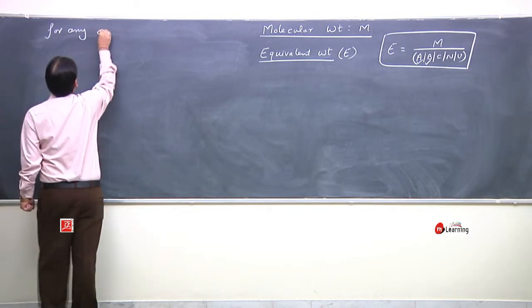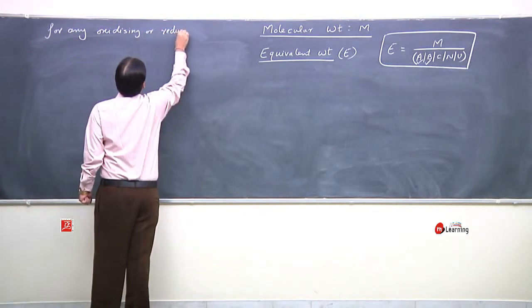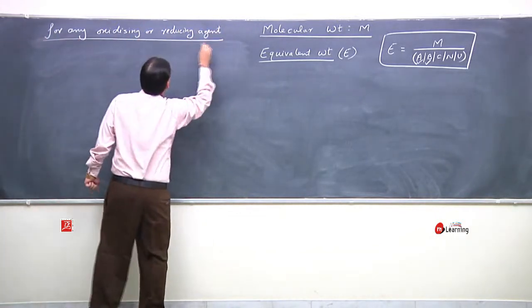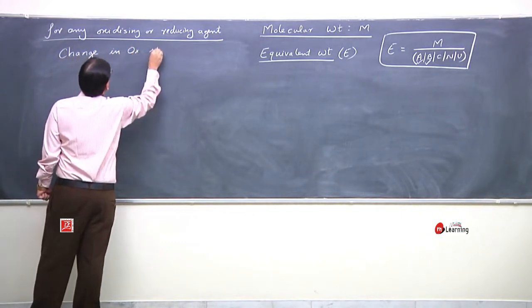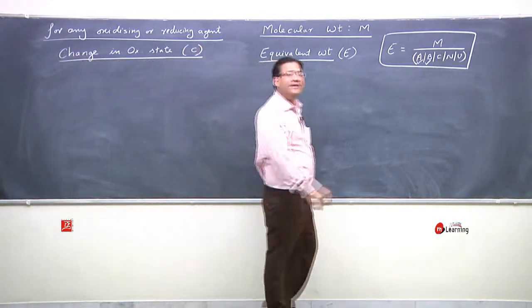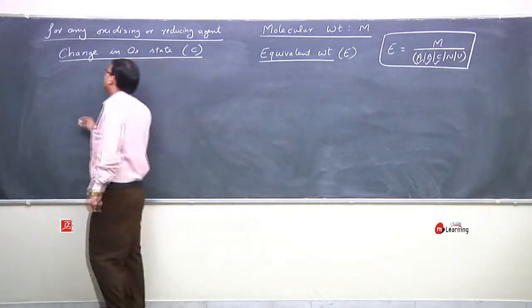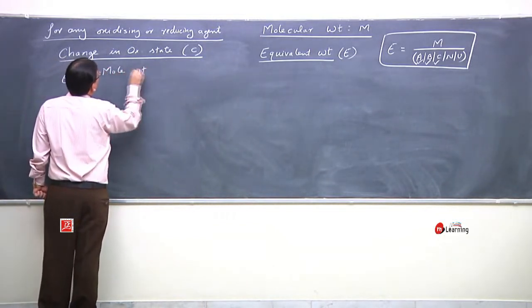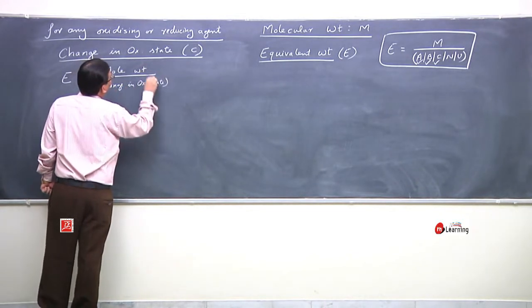For any oxidizing agent or reducing agent, we use the concept of change in oxidation state. Here C denotes change in oxidation state. The equivalent weight is defined as molecular weight upon change in oxidation state.